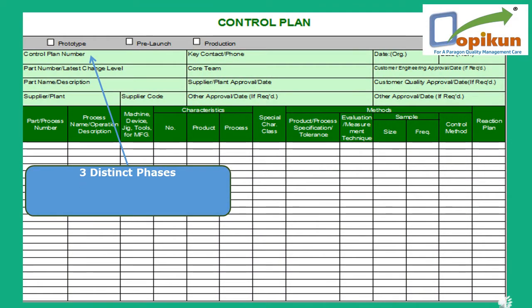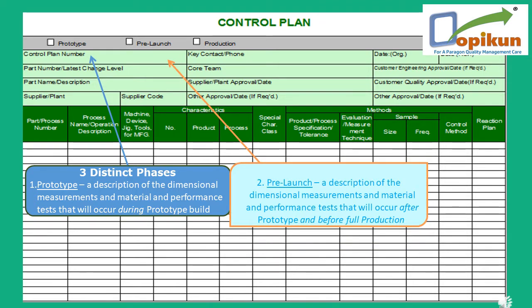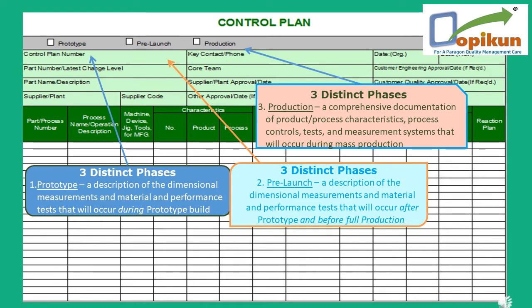In a control plan there are three distinct phases. Point one, prototype — a description of the dimensional measurements and material and performance tests that will occur during prototype build. Point two, pre-launch — a description of dimensional measurements and material and performance tests that will occur after prototype and before full production. Point three, production — a comprehensive documentation of product and process characteristics, process controls, tests, and measurement systems that will occur during mass production.